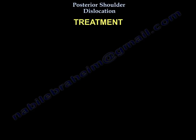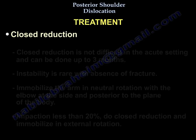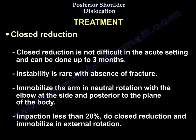For treatment, you will perform closed reduction of the dislocation. Closed reduction is not difficult in the acute setting and can be done up to three months. Instability is rare with absence of fracture. Immobilize the arm in neutral rotation with the elbow at the side and posterior to the plane of the body. For impaction less than 20 percent, do closed reduction and immobilize in external rotation.